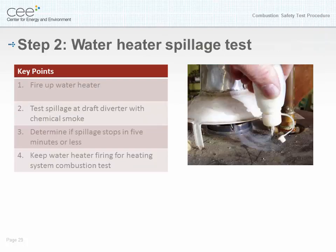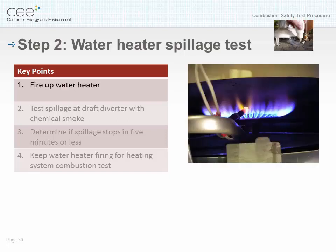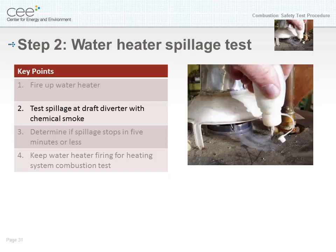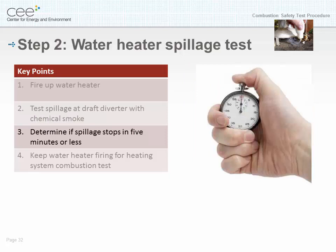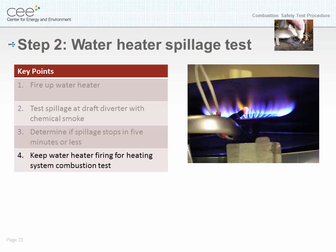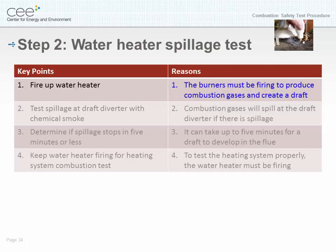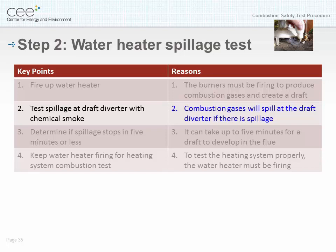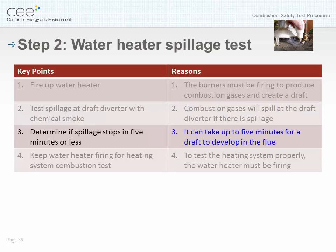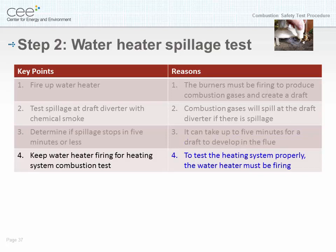Step two: water heater spillage test. Key points: number one, fire up the water heater; number two, test spillage at the draft diverter with chemical smoke; number three, determine if spillage stops in five minutes or less; number four, keep the water heater firing for the heating system combustion test. Reasoning: the burner must be firing to produce combustion gases and create a draft; combustion gases will spill at the draft diverter if there is spillage; it can take up to five minutes for a draft to develop in the flue; and to test the heating system properly, the water heater must be firing.